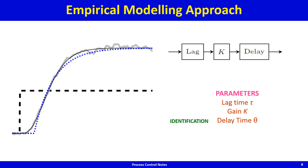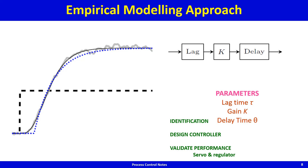This fitting is called identification — you identify the model parameters: the lag time constant tau, the gain k, and the delay time theta. Once the model parameters are identified, you design the controller on the fitted model, then implement those tuning parameters in the real process and validate the servo and regulator performance. If the fitting is good, adjustment will not be necessary.